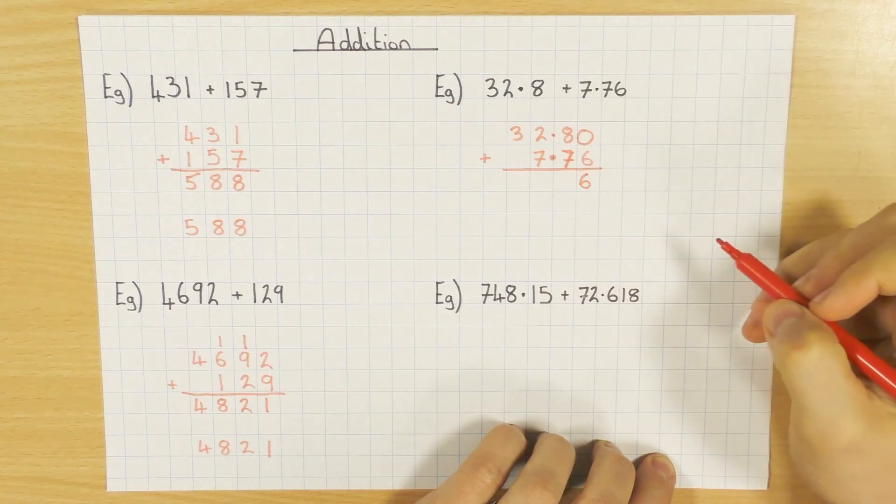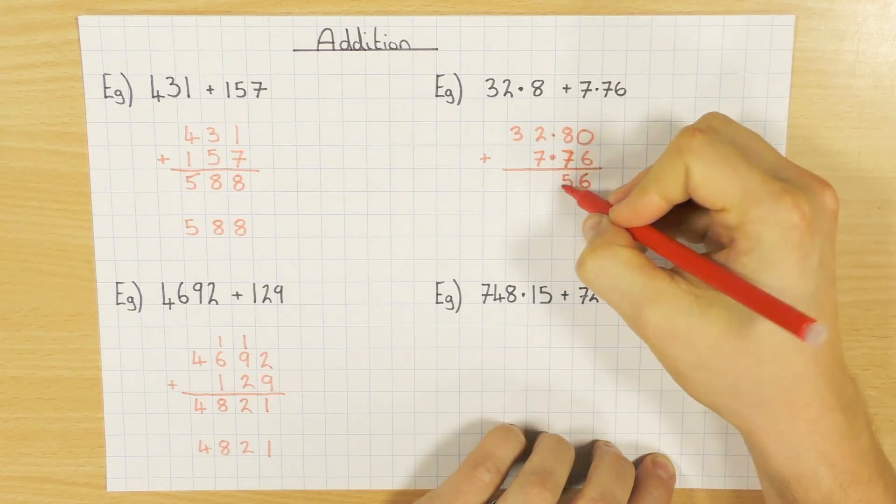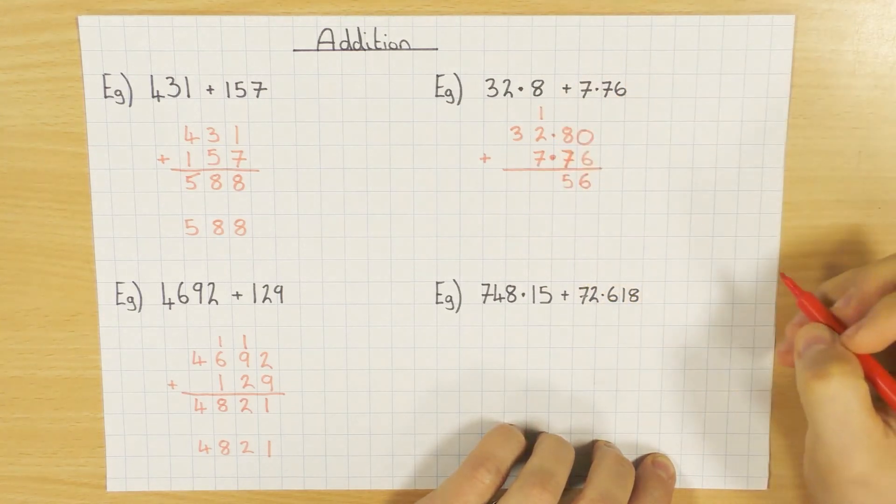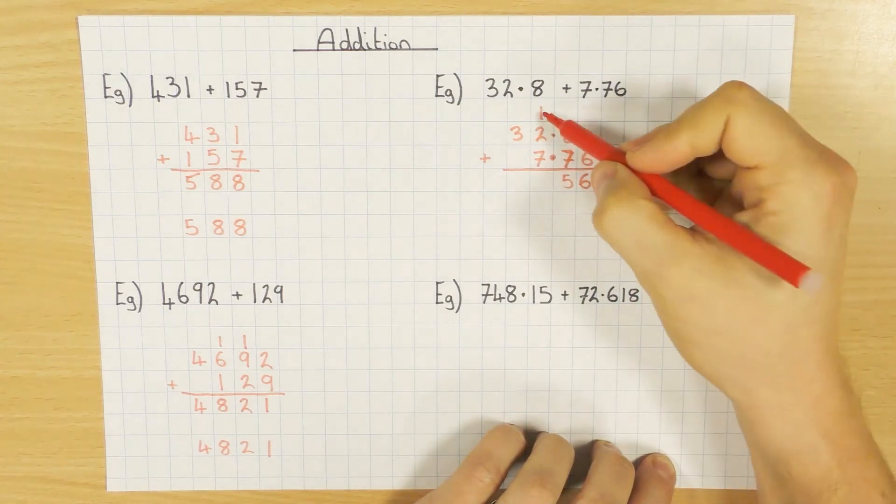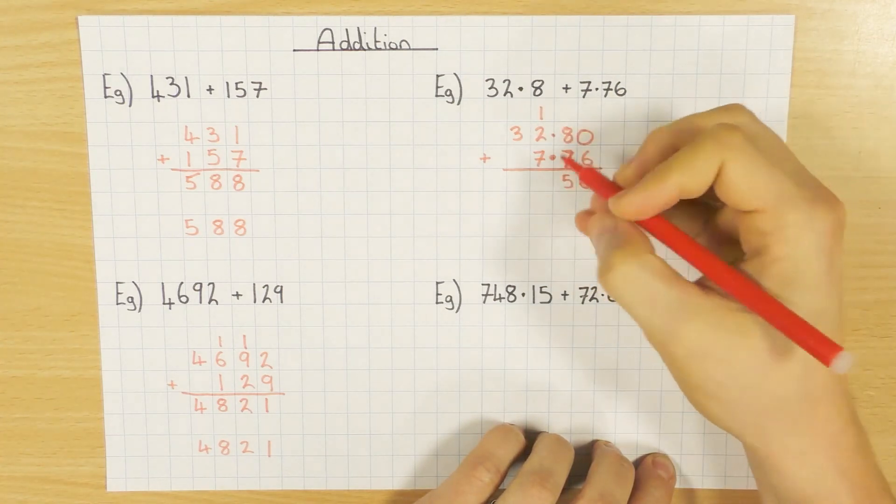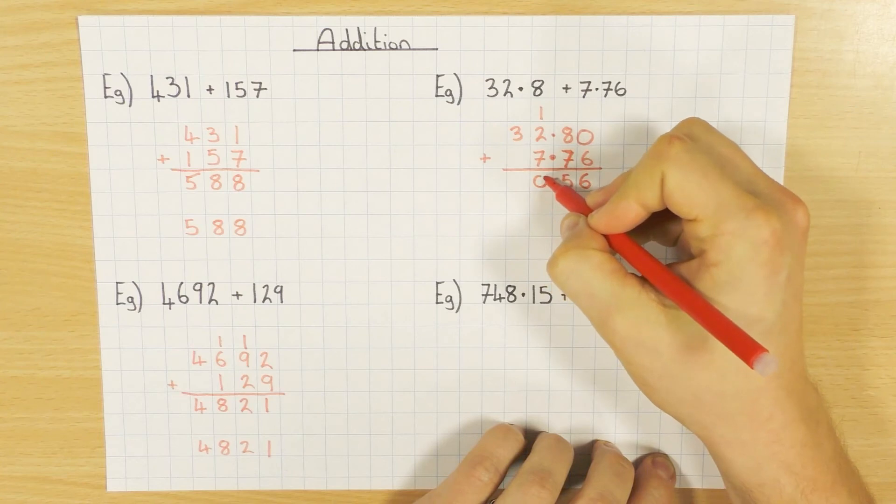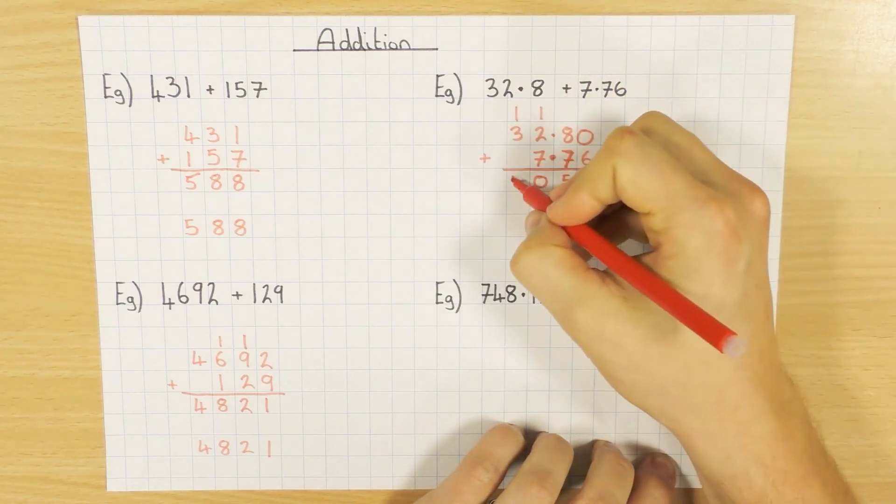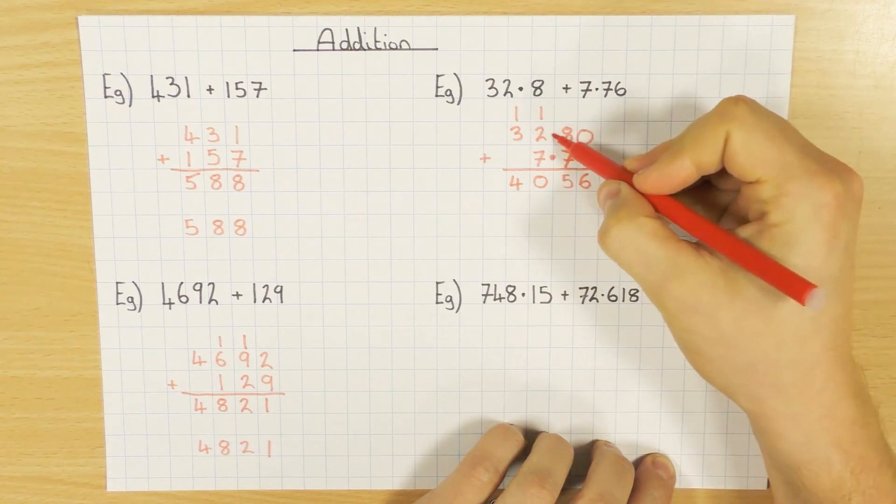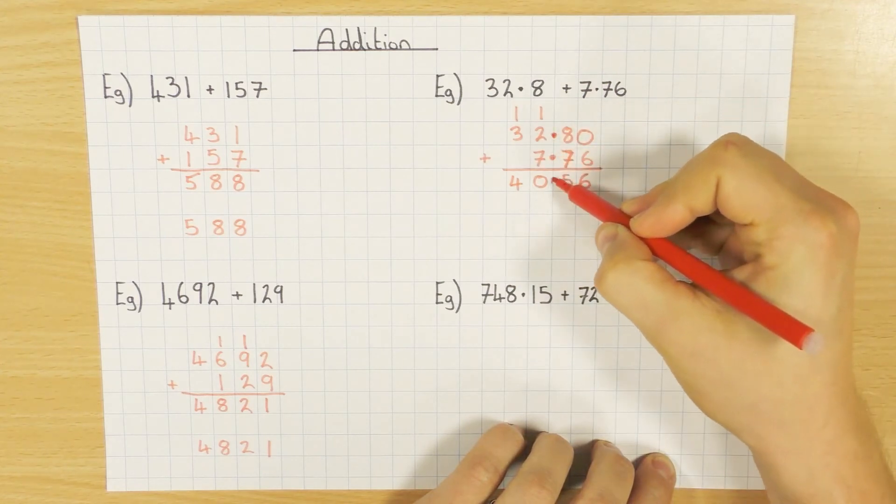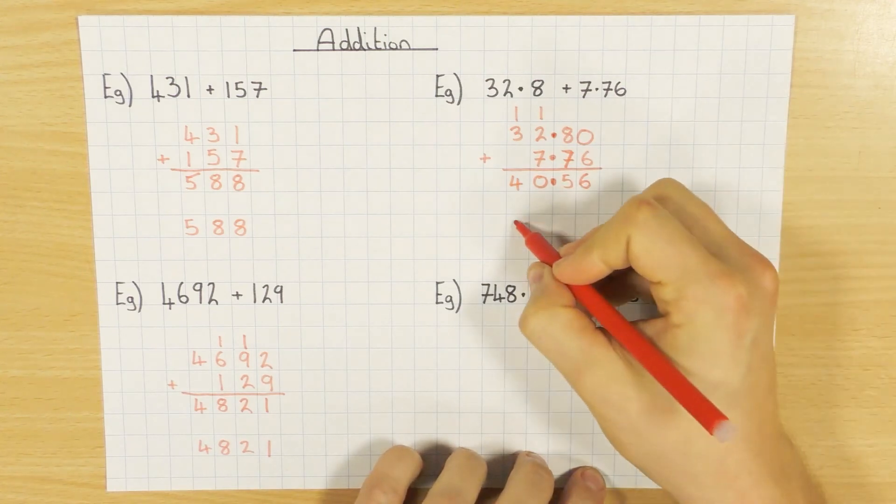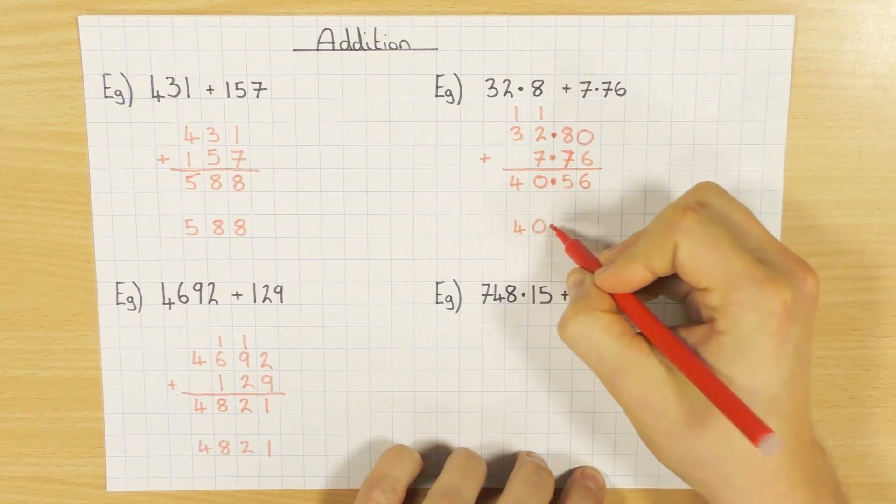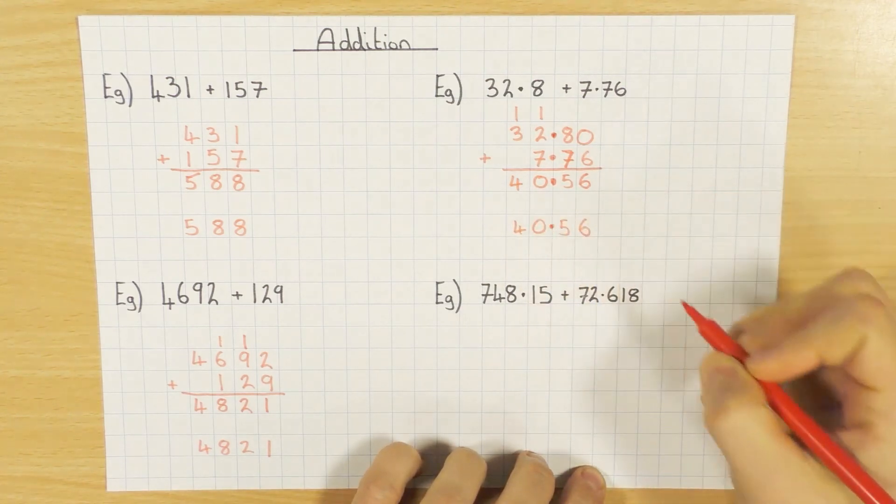So 0, add 6 is 6. 8, add 7 gives me 15. So 5, and then carry the 1 at the top so I don't forget to do it now. 1, add 2 is 3. Add 7 is 10. So 0, carry the 1. And then 1, add 3 is 4. Don't forget though, if your decimal points are lined up here, it's also going to be the same in your answer. So 40.56.